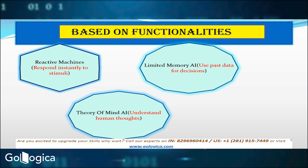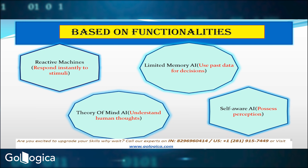Theory of mind AI tries to understand and predict human feelings and thoughts — a bit like how you might guess how your friend is feeling by their expression. Imagine a robot that can tell if you are happy or sad by looking at your face and then reacts to your emotions. Self-aware AI is the most advanced concept: AI that is aware of itself, knowing it's a robot with thoughts and feelings. This is mostly in stories for now, like robots in movies that think and feel like people. Think of AI functionalities like different tools in a toolbox — each tool has a specific job it's great at.